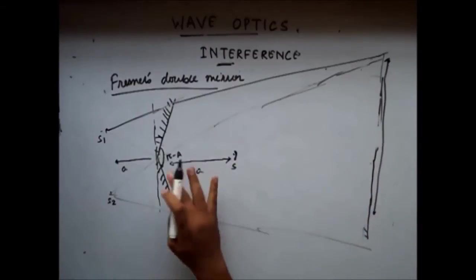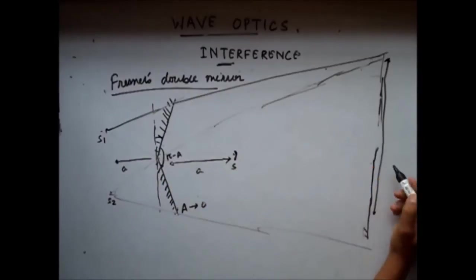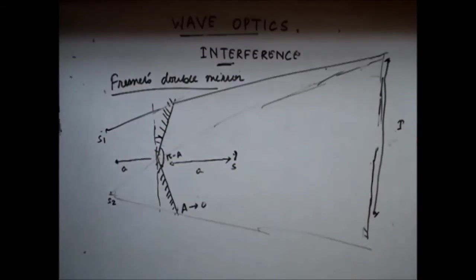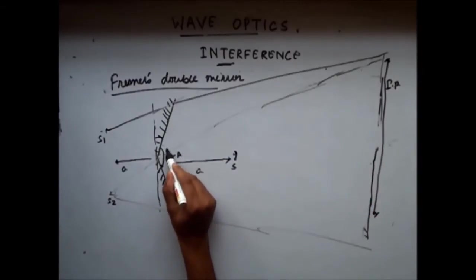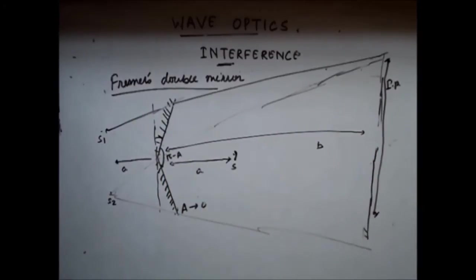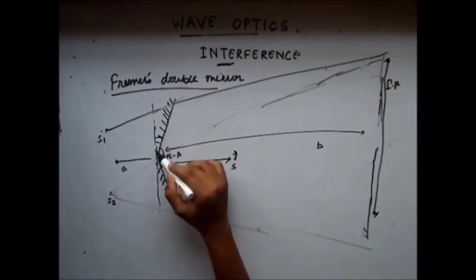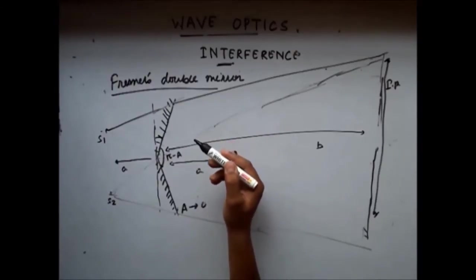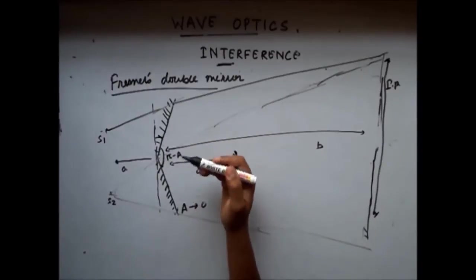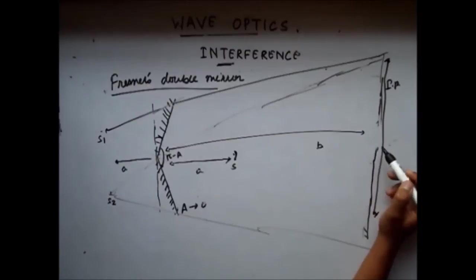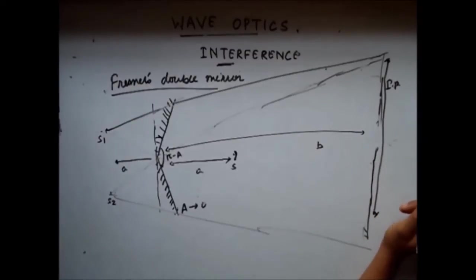Only in this common region will we get the interference pattern. Also, in Fresnel's double mirror, since both reflections give a phase change of π, the net phase difference is zero. So the interference pattern in Fresnel's double mirror will be exactly similar to what we got in Young's double slit experiment.